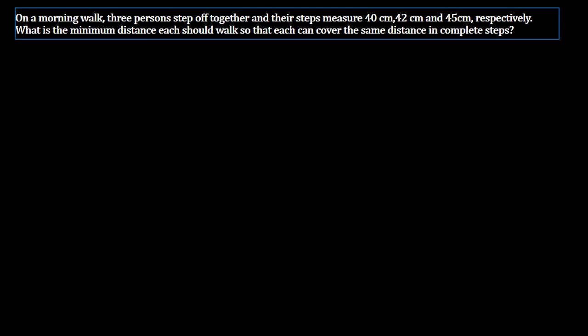So here we have a problem regarding the morning walk. Three persons step off together — that means they start together for a morning walk — and even though they start together, their steps differ, meaning the distance covered by them is different. The first person covers 40 cm per step, the second covers 42 cm, and the third covers 45 cm. We have to find the minimum distance each should walk so that they can cover the same distance in complete steps.